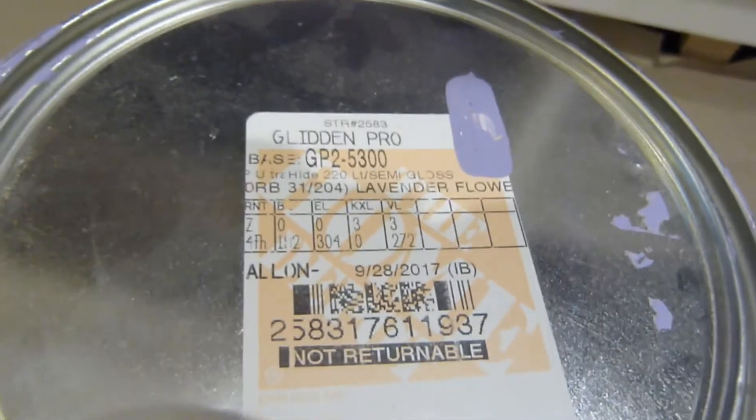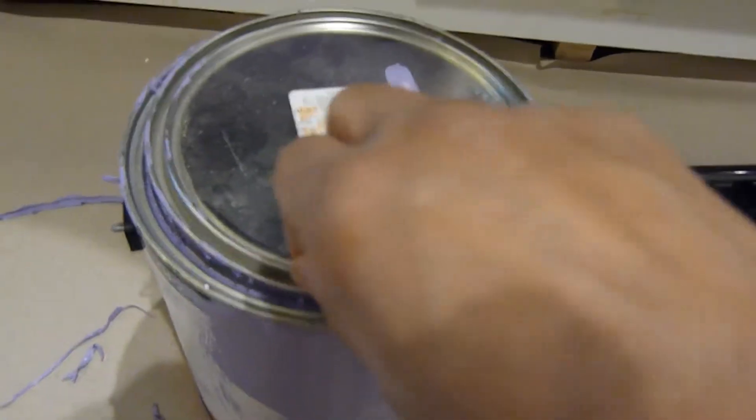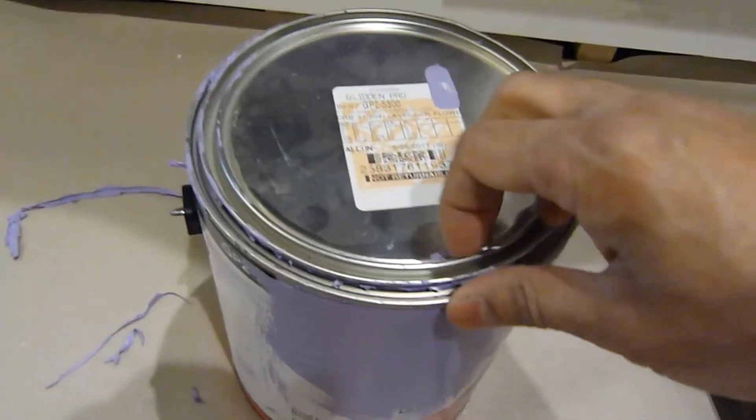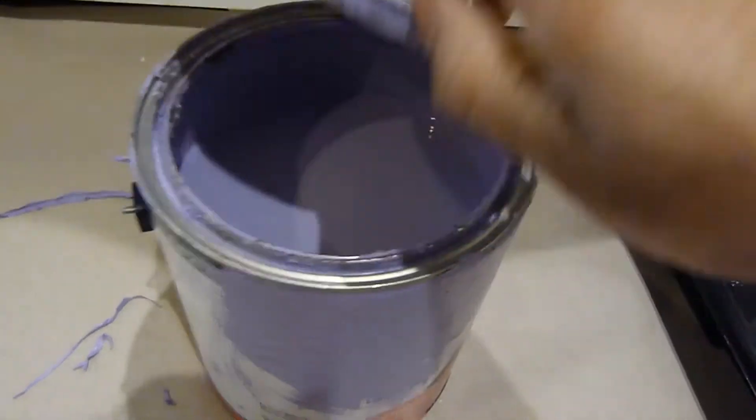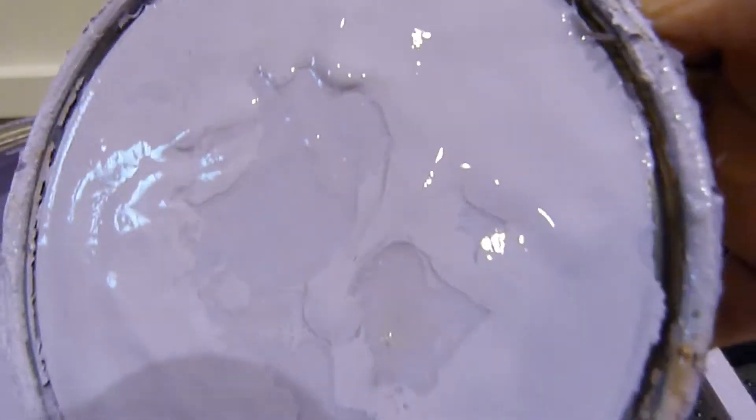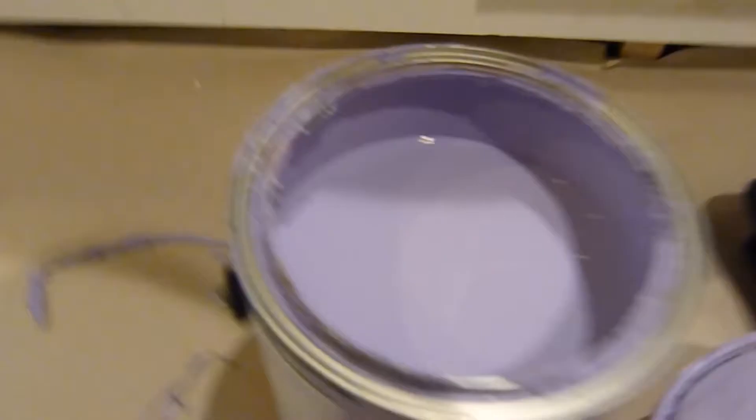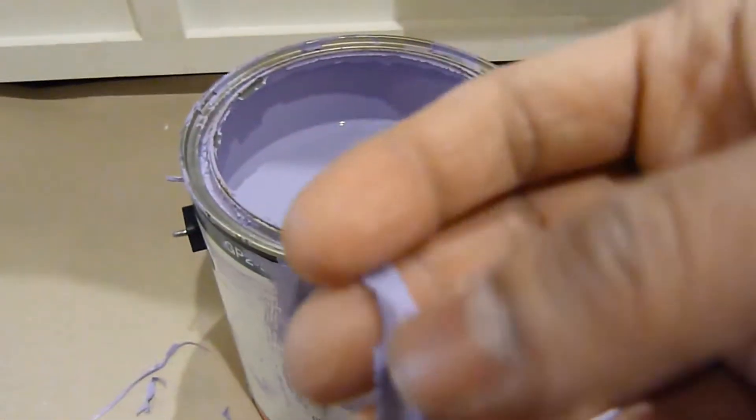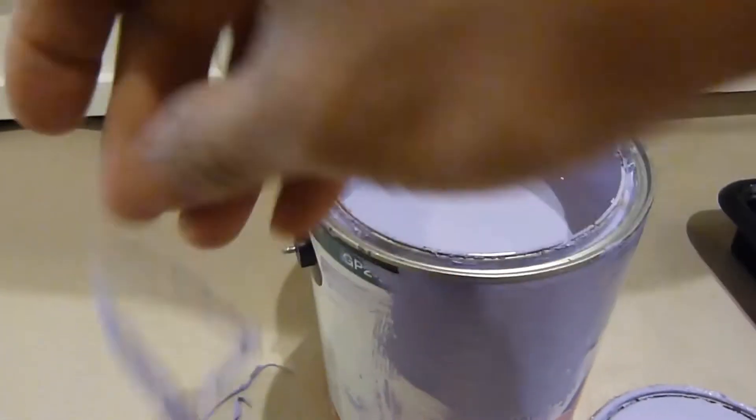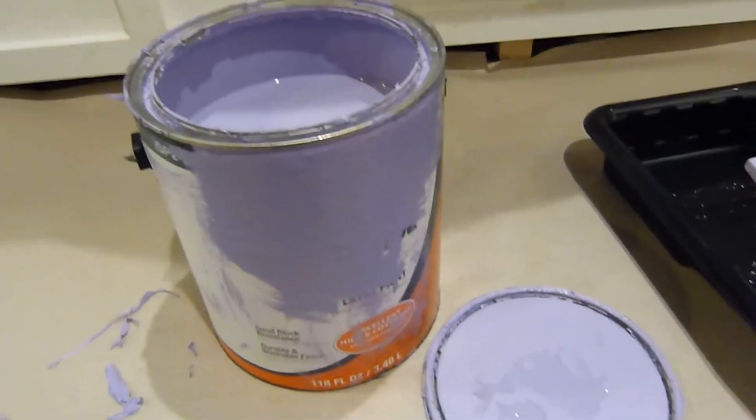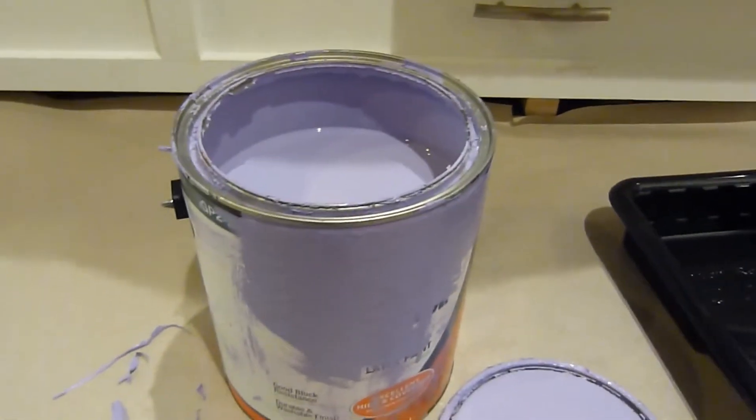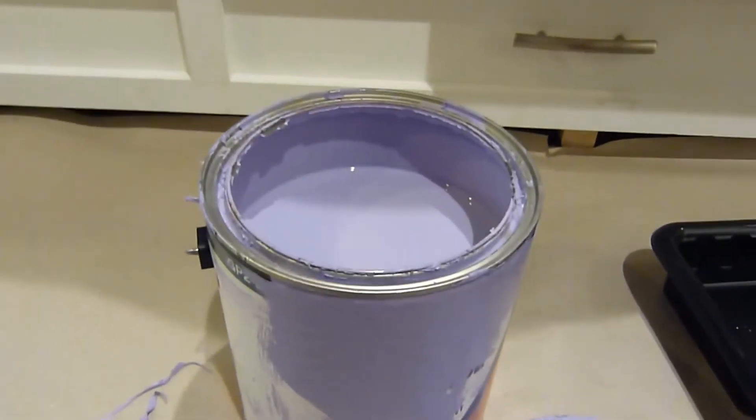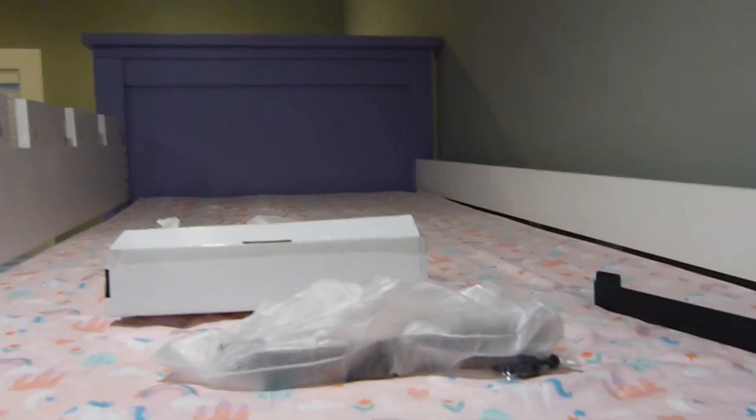This is just a Glidden Pro, using a lavender, it's latex based. Latex definitely bonds much better, it takes longer to dry. I'd say give it a good two weeks. But you can see the rich color right here. Let me show you some of the thickness of the paint. As you can see it's pretty thick and flexible, it's washable. That's why I use it for kids furniture. Hopefully you'll be able to get the same one for your product.